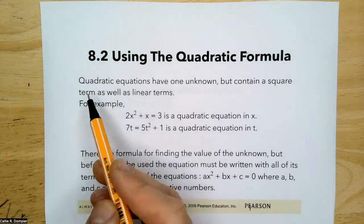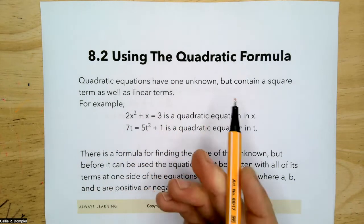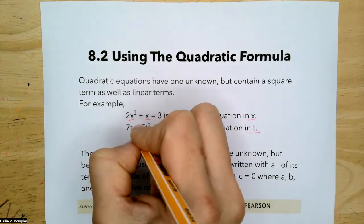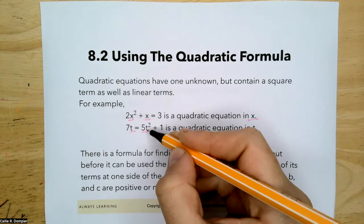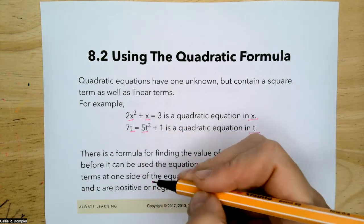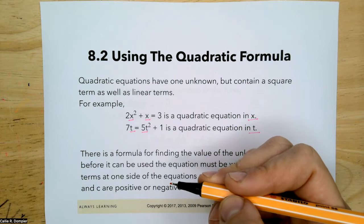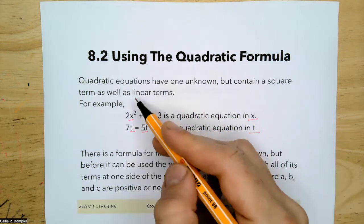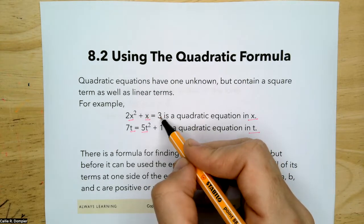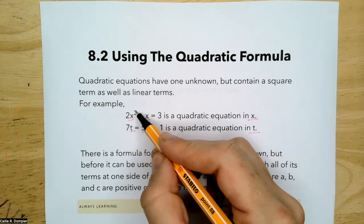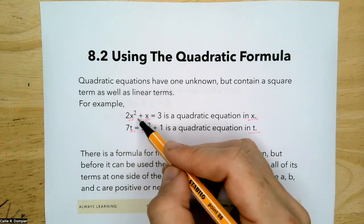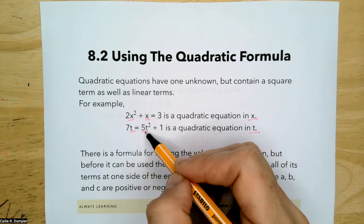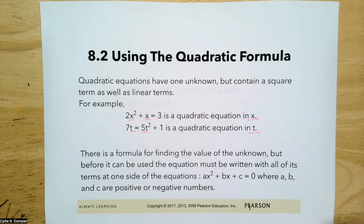Quadratic equations have one unknown — the x — which is being squared and also taken to the first power in the same equation. They contain a square term and linear terms. For example, 2x squared plus x equals 3 is a quadratic equation in x. And 7t equals 5t squared plus 1 is a quadratic equation in t.